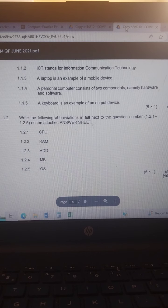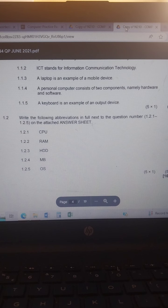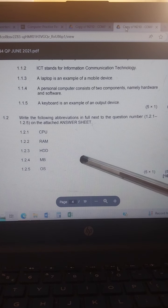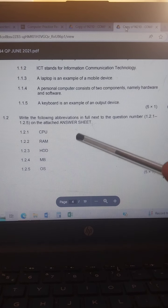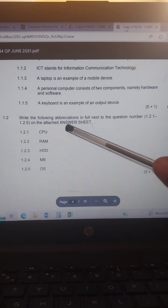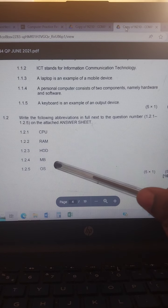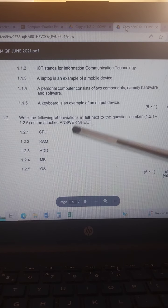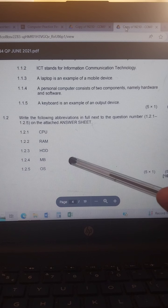Then we have RAM, which stands for random access memory. Then we have HDD, which stands for hard drive disk. Then we have MB, this stands for megabytes.